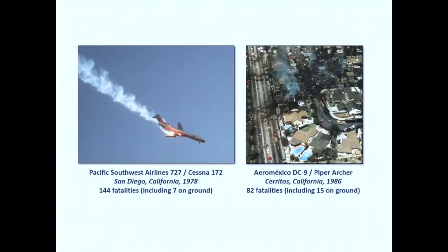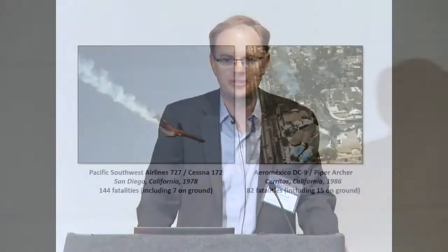The one on the left happened in 1978. Both of these were in California — over San Diego, 144 fatalities. A press photographer actually caught this as it happened on film. This led Congress to realize that we needed to develop an onboard system for aircraft that directs pilots directly how to maneuver to avoid collision. And this resulted in the TCAS program. Then there was a mid-air collision over Cerritos, California — 82 fatalities, just a few miles from Disneyland.